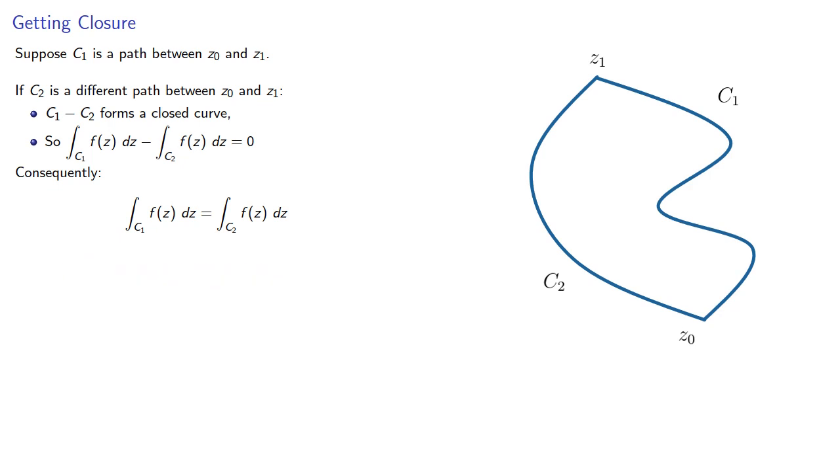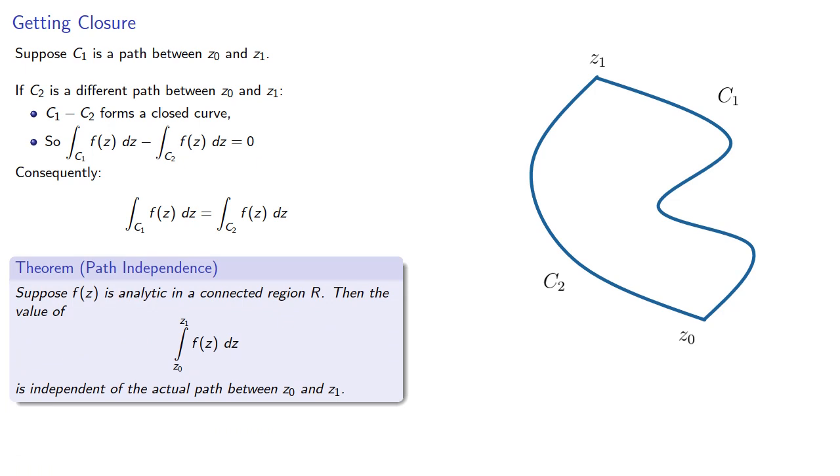And this gives us an important theorem. If our function is analytic in a connected region, then the value of the definite integral is independent of the actual path between z0 and z1. We've been assuming that our integral is path independent all along, and this finally gives us what we need. It has to be analytic in a connected region.